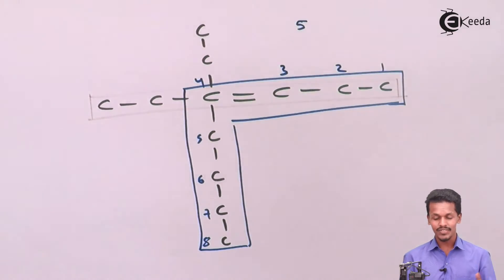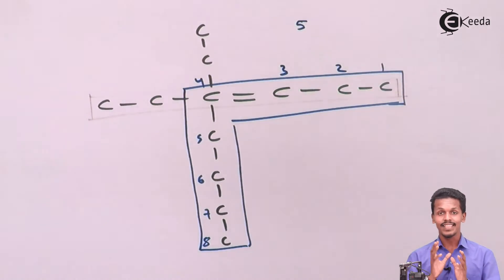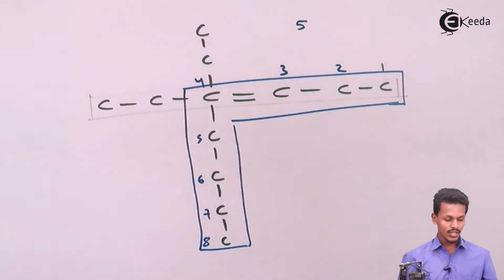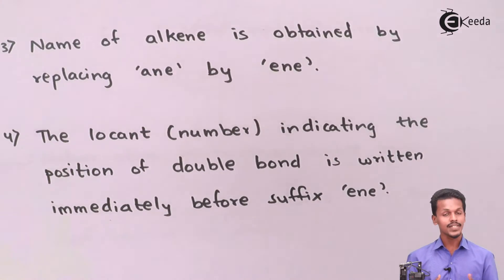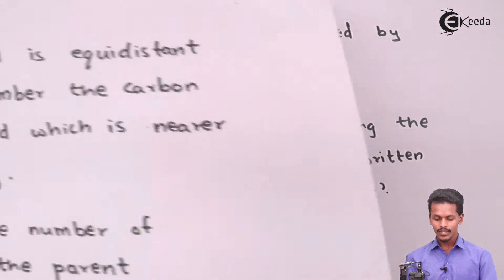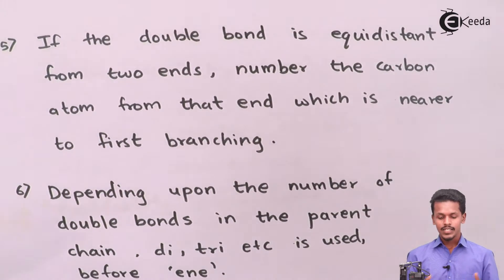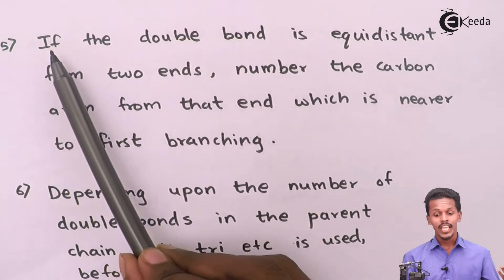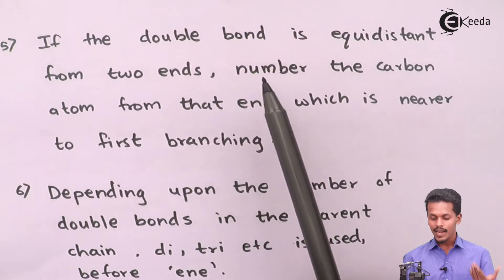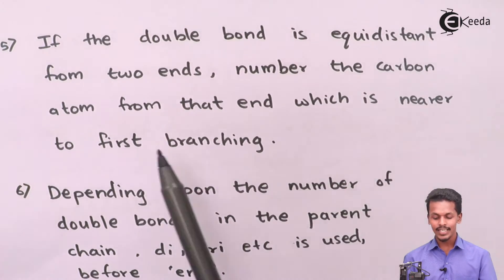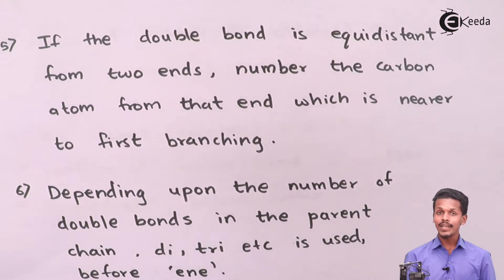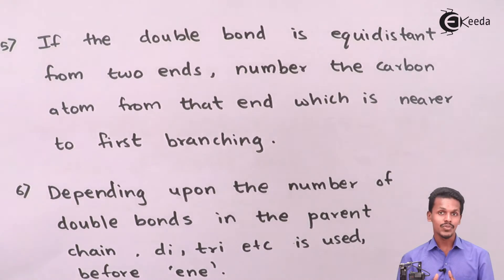So these are the rules we have studied and this is what we have to keep in mind to represent the IUPAC nomenclature. Now let us move on to the fifth rule. This says: if the double bond is equidistant from the two ends, then number the carbon atoms from that end which is nearer to the first branching. Let me explain this with an example and go back again to express this fifth point more deeply.